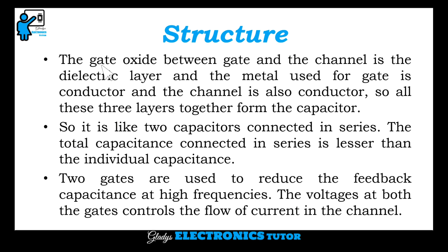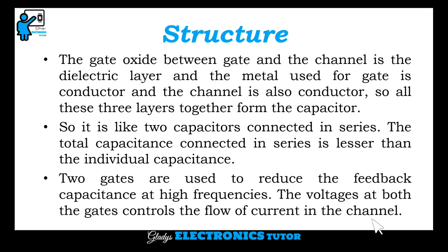In detail, the gate oxide between the gate and the channel is the dielectric layer. The metal used for the gate is a conductor, and the channel is also a conductor, so all three layers together form a capacitor. It is like two capacitors connected in series. The total capacitance in series is less than the individual capacitance, so two gates are used to reduce feedback capacitance at high frequencies. The voltages at both gates control the flow of current in the channel.